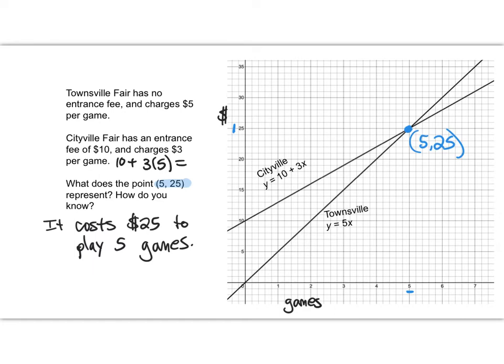At Cityville we would pay $10 to get in and then we would pay 3 times 5 games for a total of 25 if we were to play 5 games. Now at Townsville we wouldn't have to pay an entrance fee. That's zero. But we would pay 5 times 5 games. That's also 25. So our point of intersection here is the point at which both fairs charge the same price for a number of games and that happens to be 5.